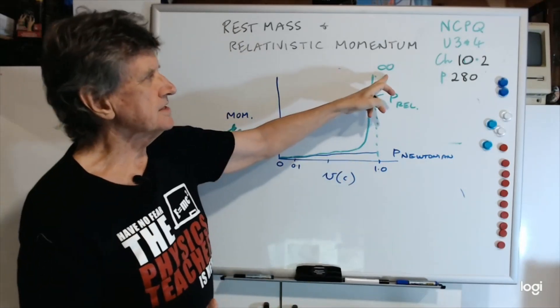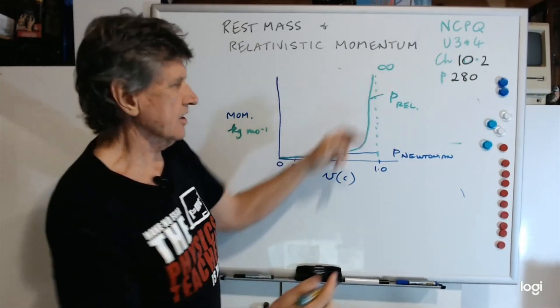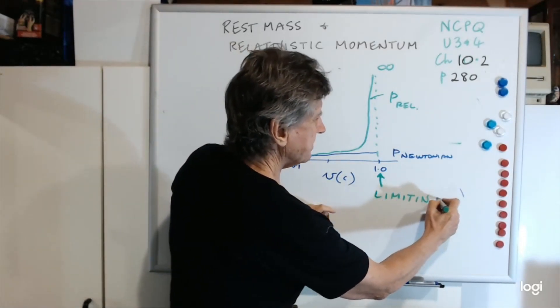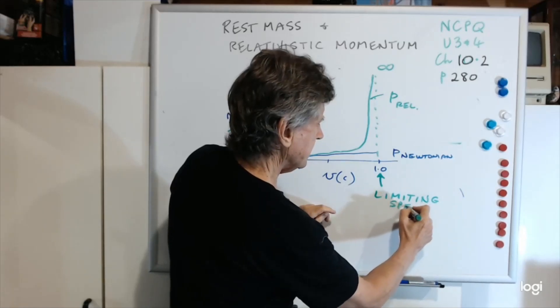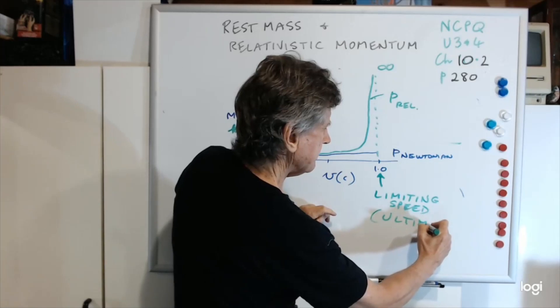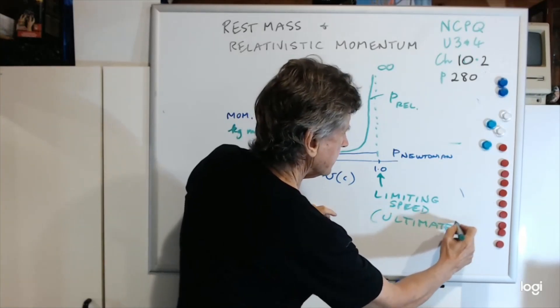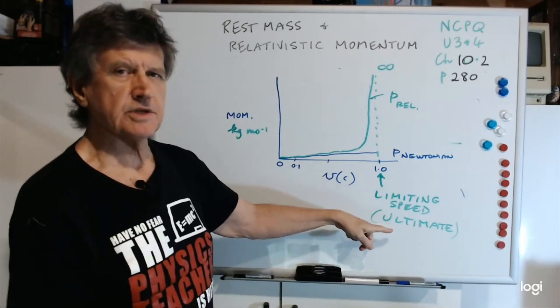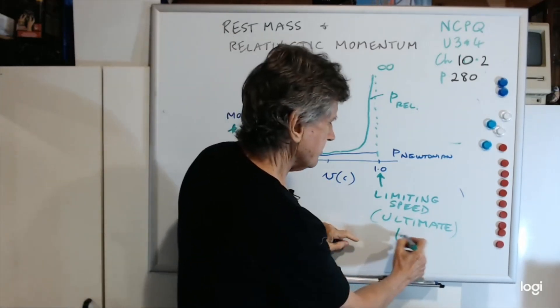This is the ultimate speed. You can't go past that point there. That's the limiting, limiting speed of the universe. The limiting speed of the universe, or the ultimate speed of the universe, is 1c.